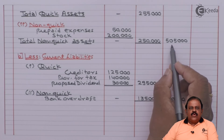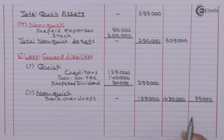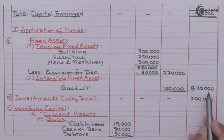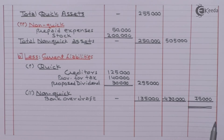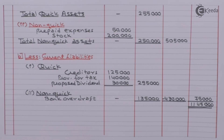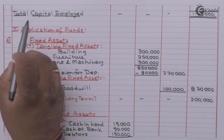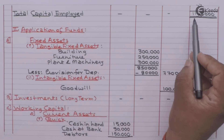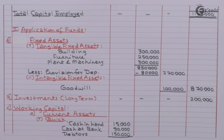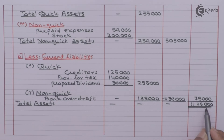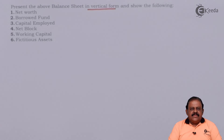Total current liabilities of Rs. 4,30,000 are deducted from total current assets of Rs. 5,05,000, giving working capital of Rs. 75,000. Adding fixed assets Rs. 8,70,000, long-term investments Rs. 2,00,000, and working capital Rs. 75,000 gives total assets of Rs. 11,45,000. Total capital employed is Rs. 11,45,000 on the liability side, and total assets side also totals Rs. 11,45,000 — our balance sheet is tallied and presented in vertical format. That was the first part of the question.